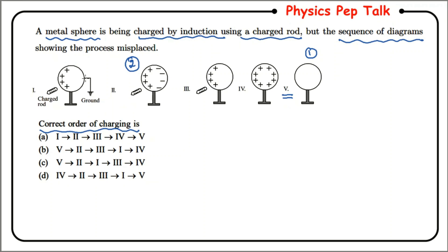In the third step, we connect the sphere to a ground. The negative charges pass through the ground and only positive charges remain on the sphere — this becomes the third step. In the next step, we remove the ground connection, leaving only positive charge on the sphere. Then when we remove the negatively charged rod from the sphere, the charge redistributes over the sphere — this becomes the fifth step.